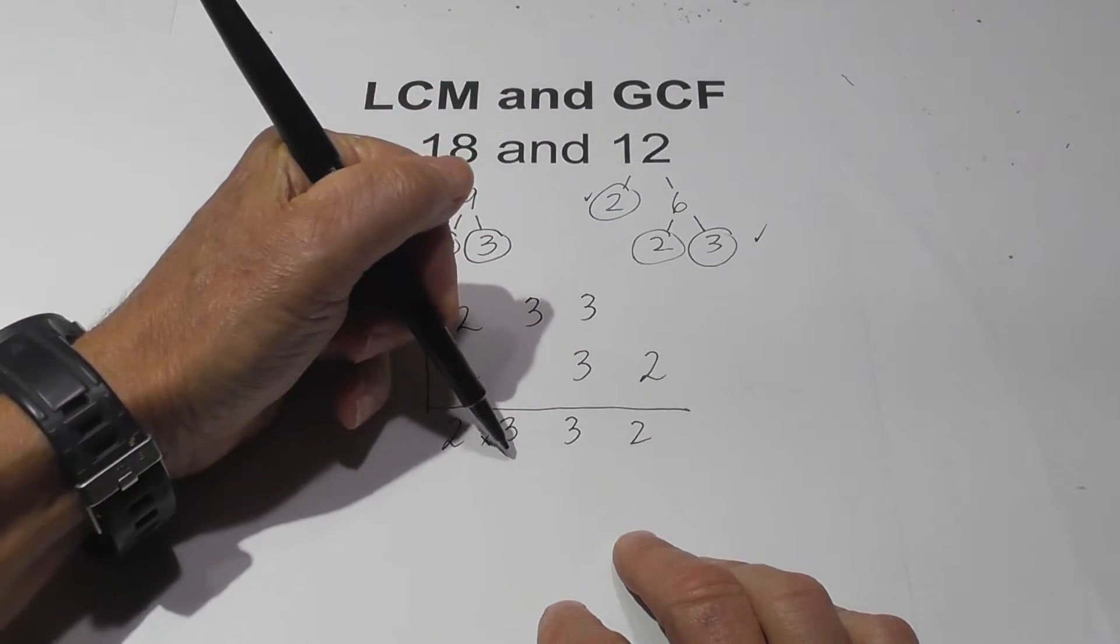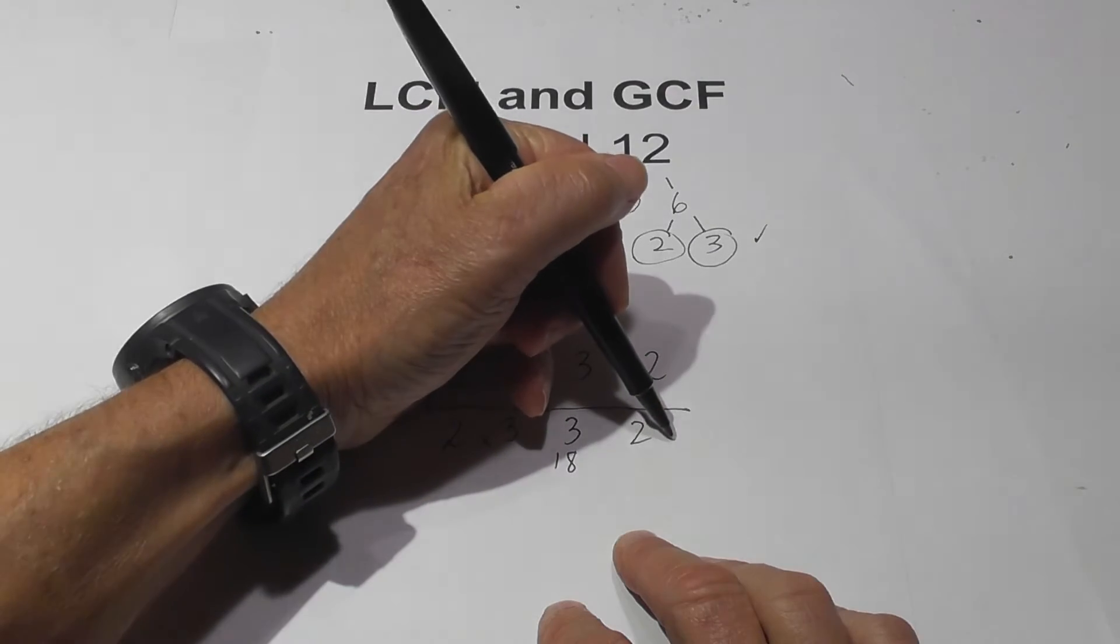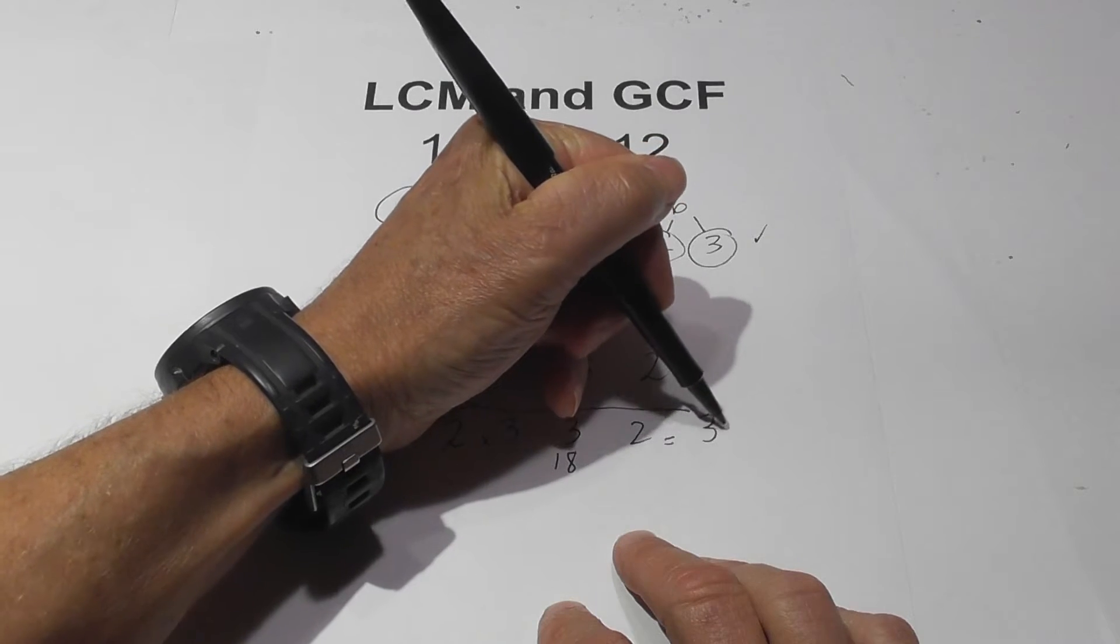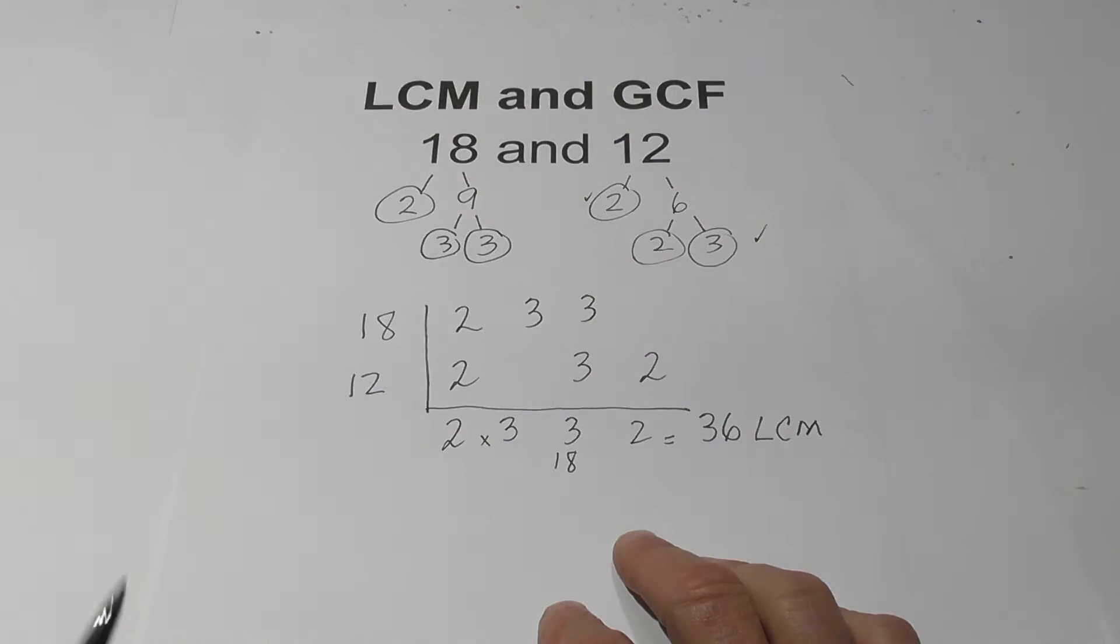2 times 3 is 6. 6 times 3 is 18. 18 times 2 is 36. So the LCM of 12 and 18 or 18 and 12 is 36.